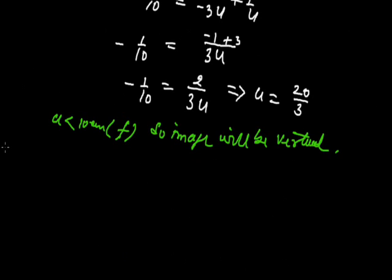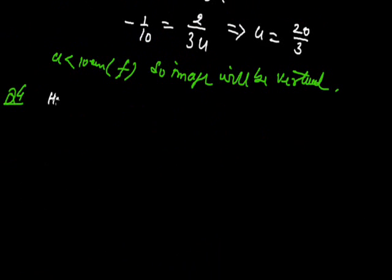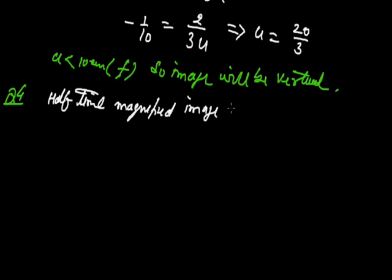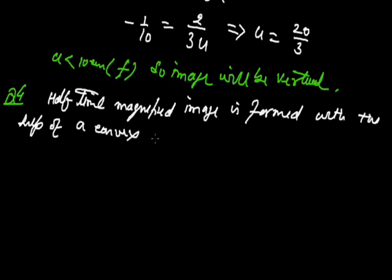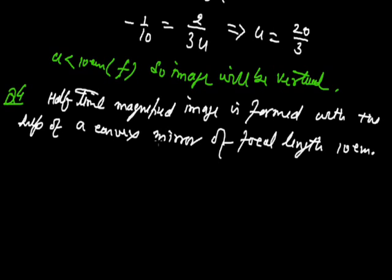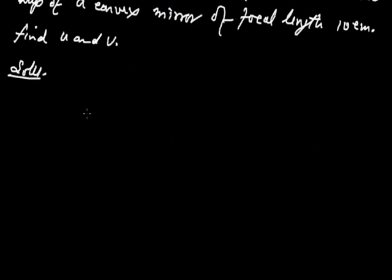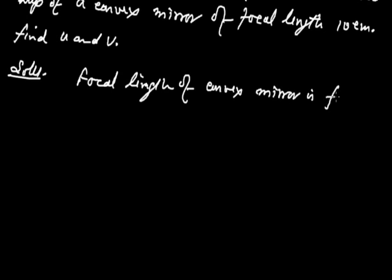Next question. A half-times magnified image is formed with the help of a convex mirror of focal length 10 cm. Find U and V. The focal length of the convex mirror F is plus 10 cm.